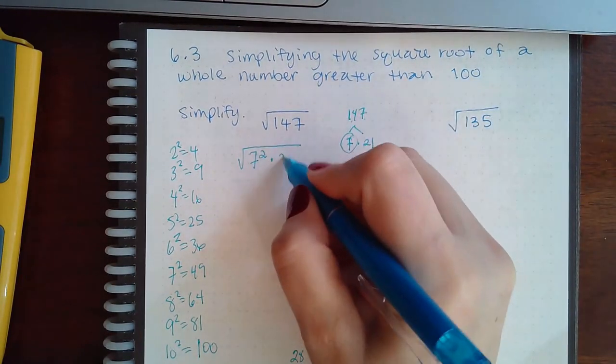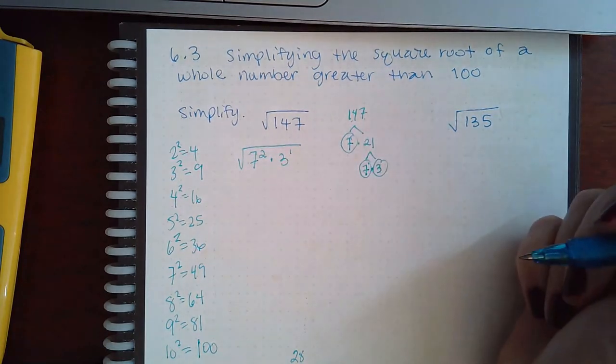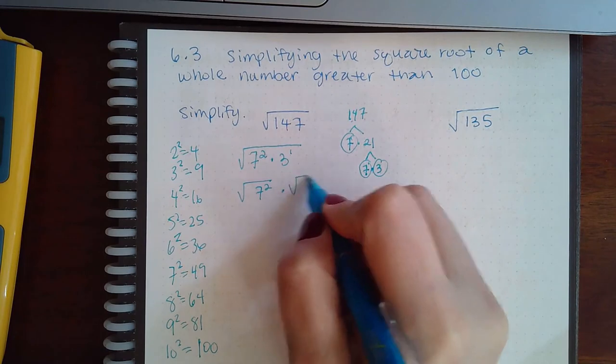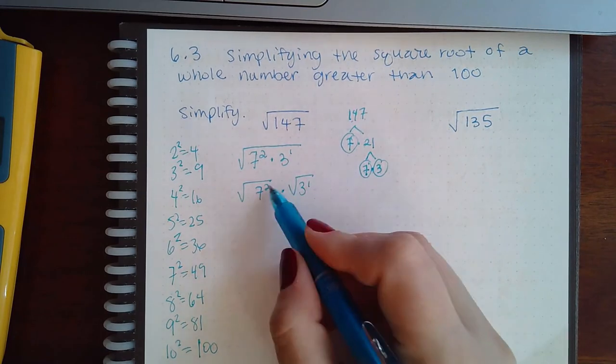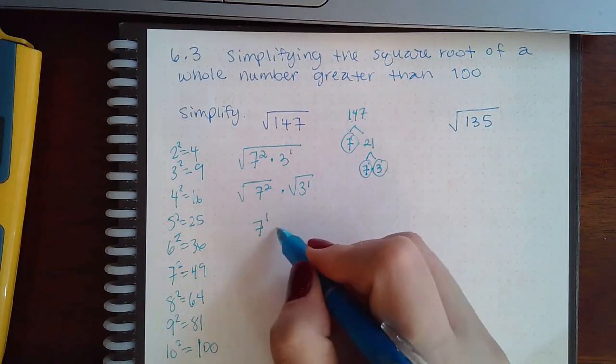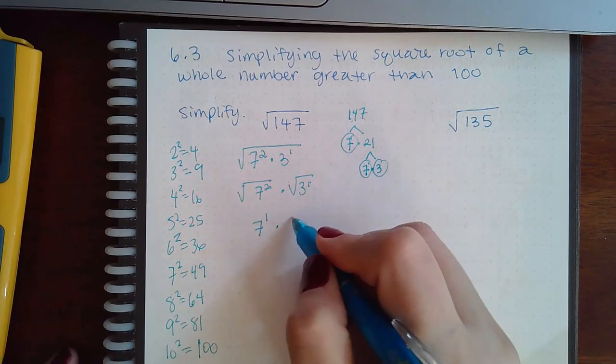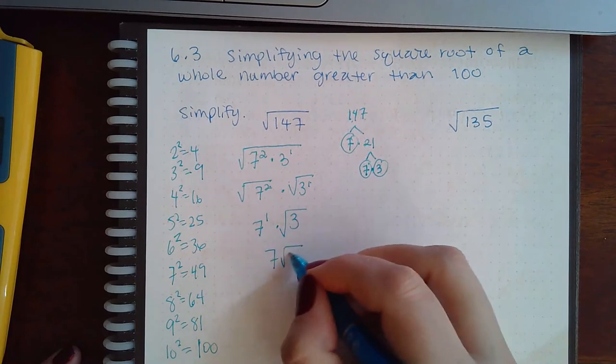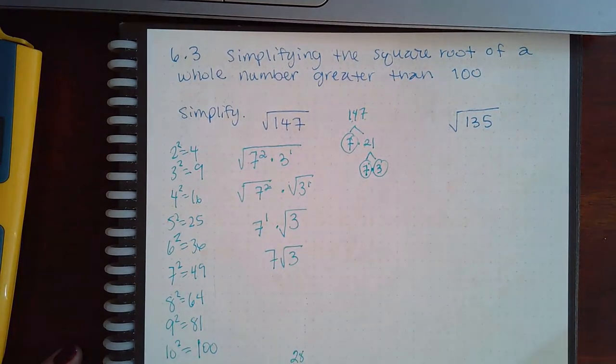So then I'm going to put in here 7 to the 2 power because there's 2 of them, and then 3 to the 1 power because there's only 1 three. When I break this up, this becomes 2 over 2 which is 1, and then that would be 1 over 2 which is going to stay a fraction, so it's going to stay a root. And so the response here is 7 and the square root of 3.